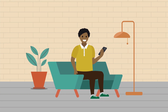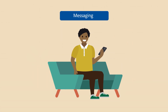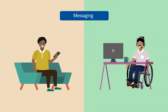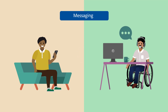Some customers prefer the convenience of texts or messaging apps, so set up messaging. Customers can send messages over text or apps like Facebook Messenger and WhatsApp, and agents can respond from the Service Console. You can also notify customers via text — for example, if case status changes — and customers can respond with questions.